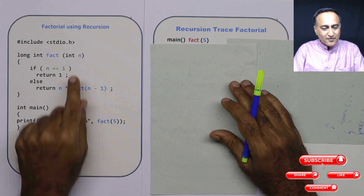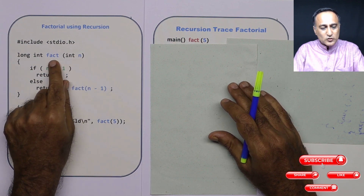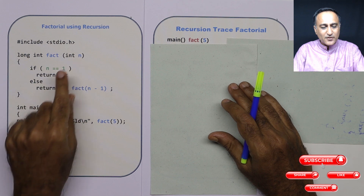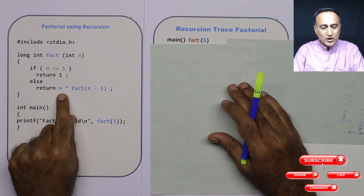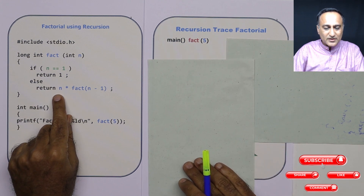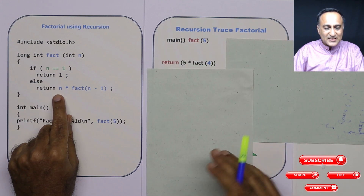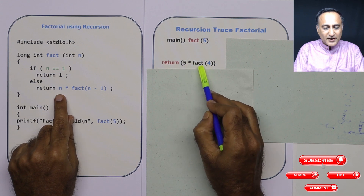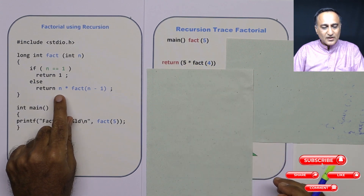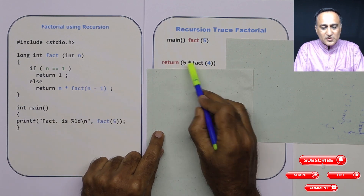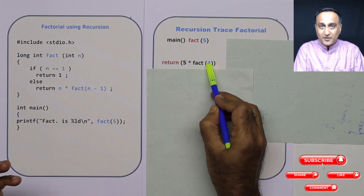Once I call fact(5), the value of n is 5. Since n is 5, the condition 5 equal to 1 is false. So I come to the return statement. The return says n into n minus 1 factorial, so it is 5 into fact(4). Now 5 is resolved, but fact(4) I have not yet found out.